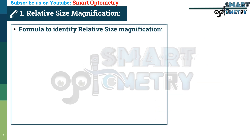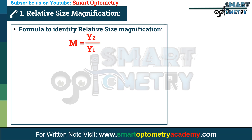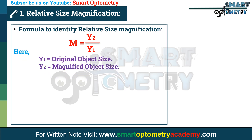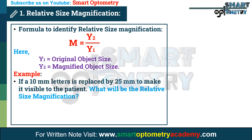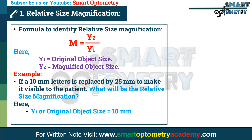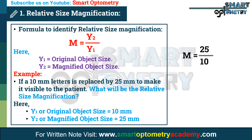The formula to identify relative size magnification is M = Y2 divided by Y1, where Y1 equals the original object size and Y2 equals the magnified object size. For example, if a 10 mm letter is replaced by a 25 mm letter to make it visible to the patient, then Y1 = 10 mm and Y2 = 25 mm, so magnification = 25 divided by 10, or 2.5x.